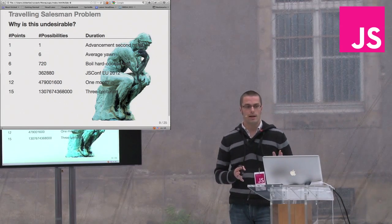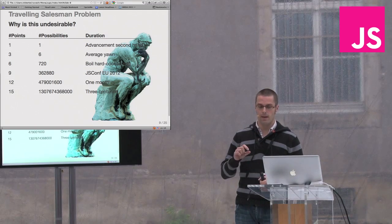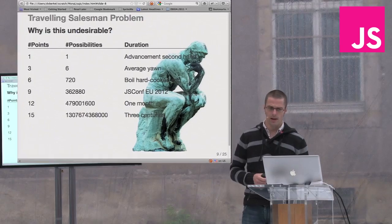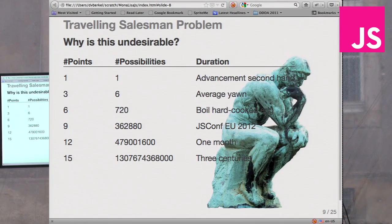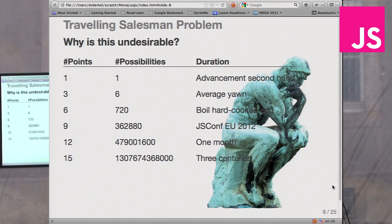Why not? Let's imagine a one-point city — the problem will become trivial, there's only one possibility to check. Let's say we can do that in one second. As the number of points we have to visit grows, the possibilities grow very fast, and the duration grows amazingly. For example, with three cities in the tour, you have six possibilities and can check them in a yawn. But if we take 15 towns, it's roughly three centuries before you're finished checking all the possibilities.